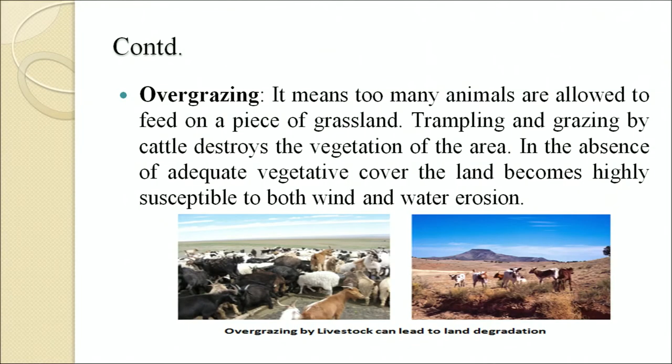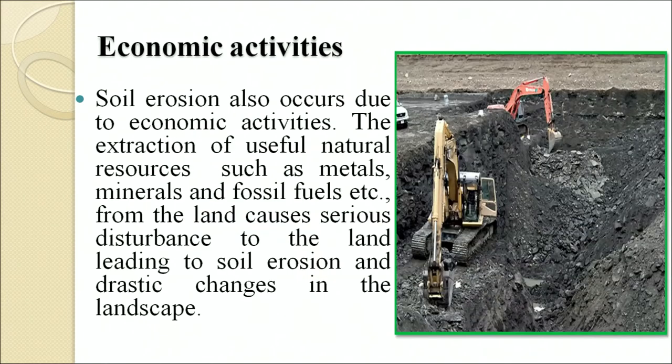Overgrazing means too many animals are allowed to feed on a piece of grassland. Trampling and grazing by cattle destroys the vegetation of the area. In the absence of adequate vegetative cover, the land becomes highly susceptible to both water and wind erosion.